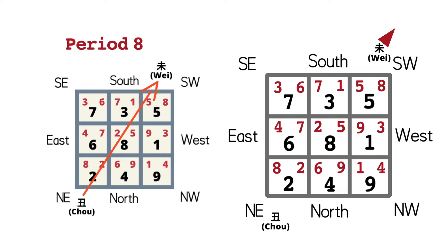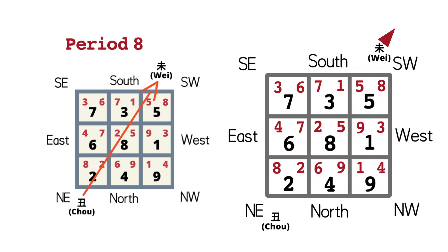In Period 8, number 8 star is an auspicious star, so we need to find where number 8 star is on the chart. As we can see, number 8 is on the left-hand side of the sitting direction and the right-hand side of the facing direction. This means that this house has good feng shui. For more details, please check out my previous video.